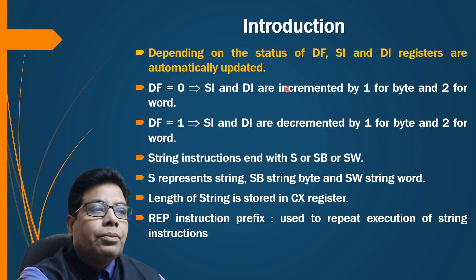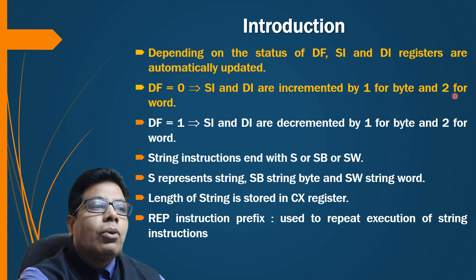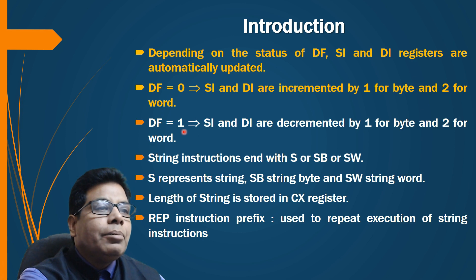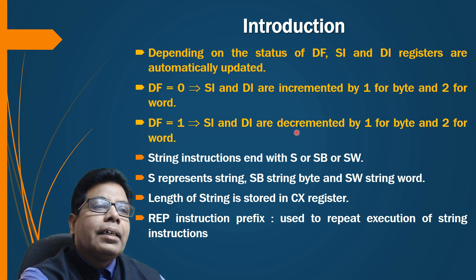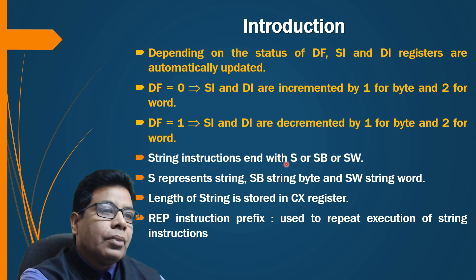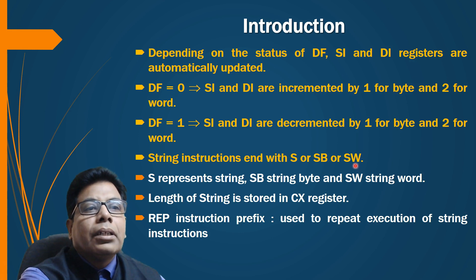If DF equals zero, then SI and DI are incremented by one for a byte operation and by two for a word operation, because a word is 16-bit long. If DF equals one, then SI and DI are decremented by one for a byte operation and by two for a word operation.